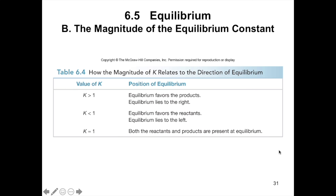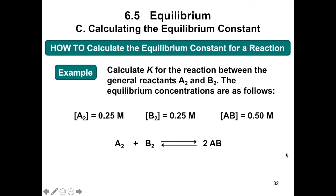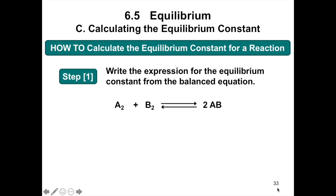Let's work on some examples in calculating the equilibrium constant. Calculate K for the reaction between A₂ and B₂. The equilibrium concentrations are: [A] = 0.25 M, [B] = 0.25 M, and [AB] = 0.50 M. The balanced equation is A₂ + B₂ → 2AB. We first write the expression for the equilibrium constant: K is equal to the concentration of AB raised to the power of 2, divided by the concentration of A multiplied by the concentration of B.